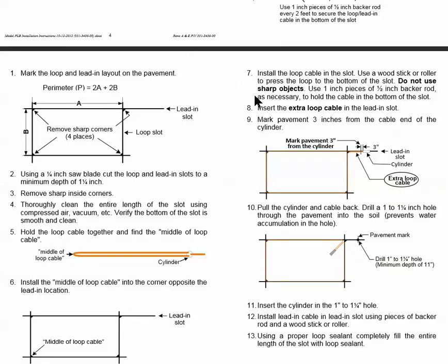In step seven, eight, nine, it talks about not using sharp tools to push the preform loop into the saw cut and about the extra loop cable in the lead in slot.